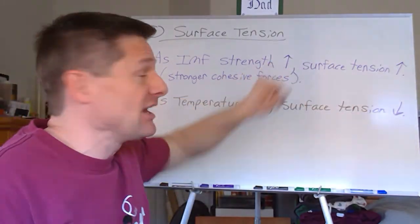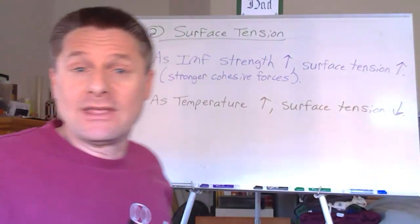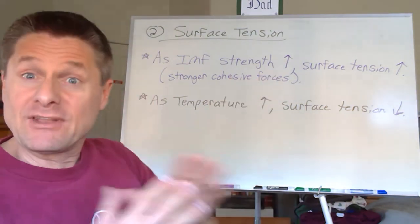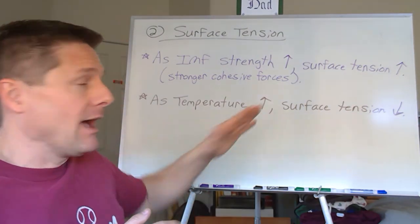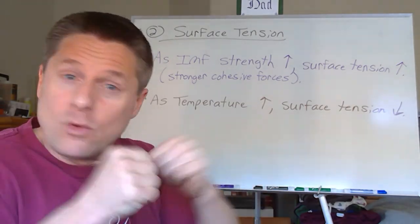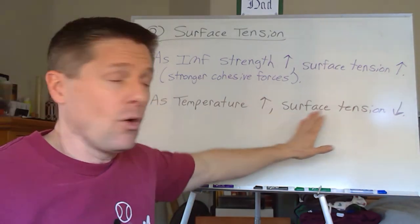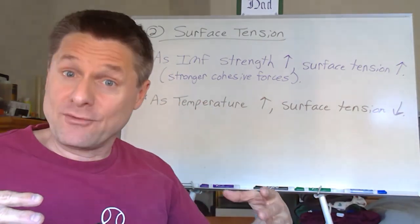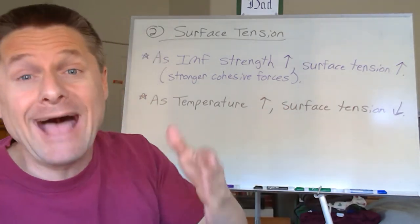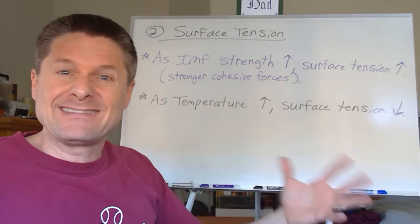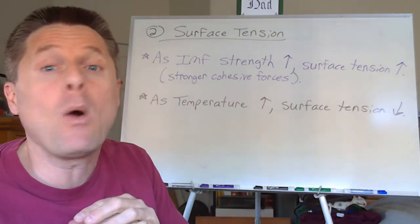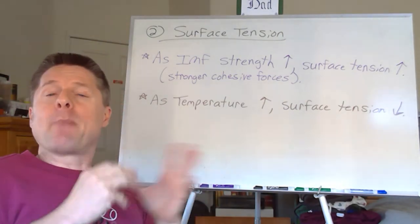Because temperature disrupts intermolecular forces, it takes less energy to spread the liquid out. So surface tension decreases as temperature increases — the same effect as with viscosity. Surface tension and viscosity follow the same qualitative parameters with respect to intermolecular force strength and temperature, but surface tension requires a bit more thought because you have to consider what surface the liquid is in contact with.